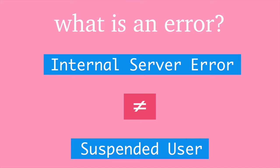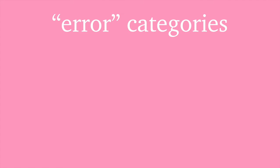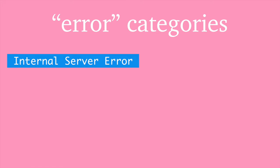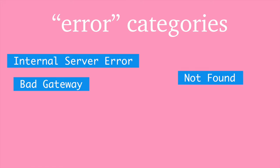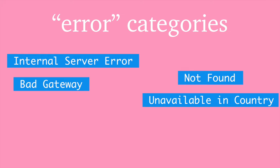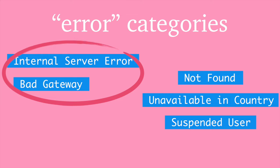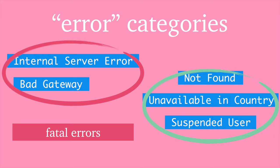So this kind of leads us into something that I like to call error categories. It seems like there's just two categories of things. You have things like internal server error and bad gateway, and then you have things like not found, unavailable in country, and suspended user. To me these are totally different things. The things in the first group I would call fatal errors — these are things that are really bad, maybe someone should get paged. And then the other things I would call alternative results — they're not really errors. They're like okay things to have.